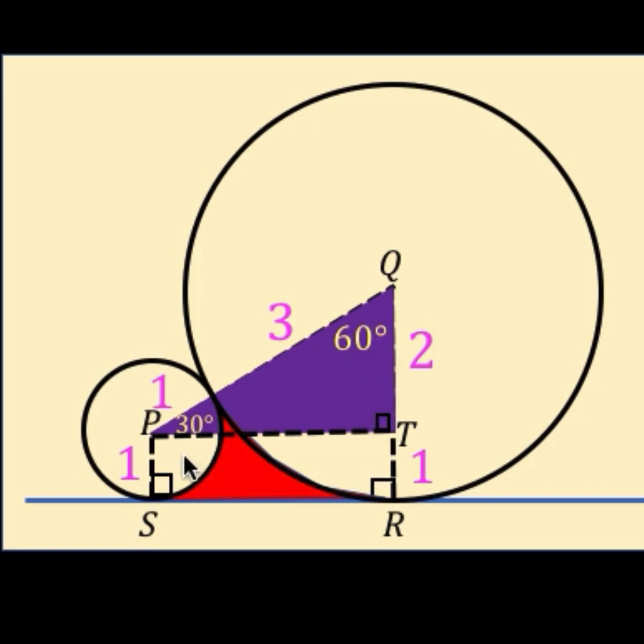From here, it follows that the length of the side PT can be computed as the square root of 3 over 2 times the hypotenuse. And the square root of 3 over 2 times 4 is equal to 2 square root of 3. That is the length of side PT.